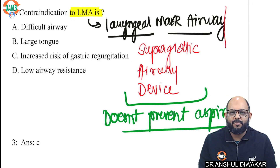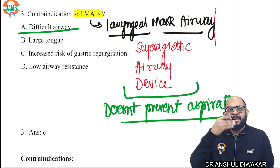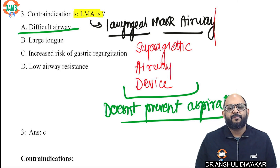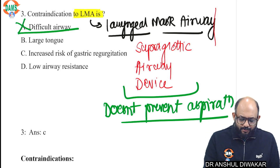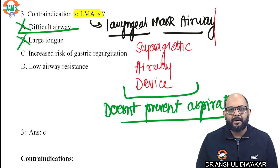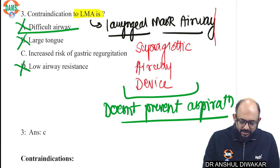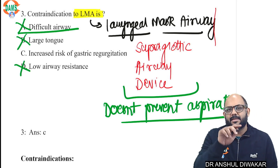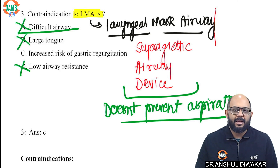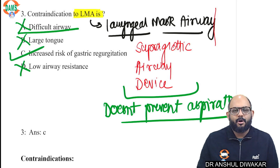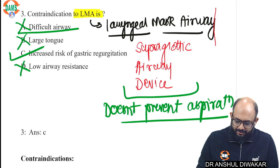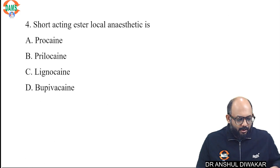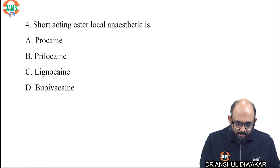One thing we know for sure is that LMA is not a definitive airway — it does not prevent the risk of aspiration. Can it be used in difficult airway? Yes, it is one of the main methods of securing airway in difficult airway, so that is an indication, not a contraindication. Can it be used with a large tongue? Yes. High airway resistance is a contraindication because ventilating pressures required would be very high and cause gas leak. It should not be used when there is increased risk of gastric regurgitation.